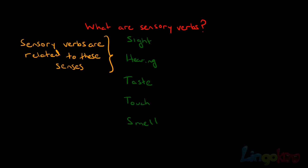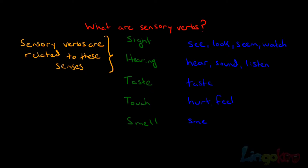Examples of sensory verbs for each sense are: for sight — see, look, seem, watch; for hearing — hear, sound, listen; for taste — taste; for touch — hurt and feel; and for smell — smell.